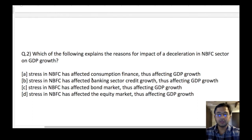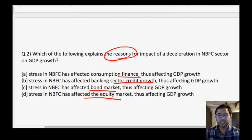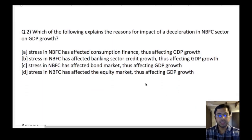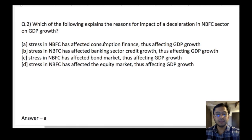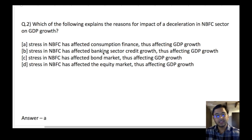Next question: which of the following explains the reasons for impact of deceleration in the NBFC sector on GDP growth? Stress in NBFC has affected consumption finance, thus affecting GDP — correct. Stress in NBFC has affected banking sector credit growth — not the main reason, because it is the banking sector that provides credit to NBFC, not the other way round. So if there is stress in NBFC, that does not mean the banking sector is directly affected. Stress in NBFC affecting bond market and equity market — less direct. Answer is A. NBFCs provide loans to retail sectors like housing, automobile, etc., thus affecting consumption finance and GDP growth.